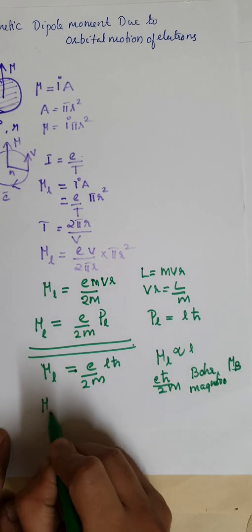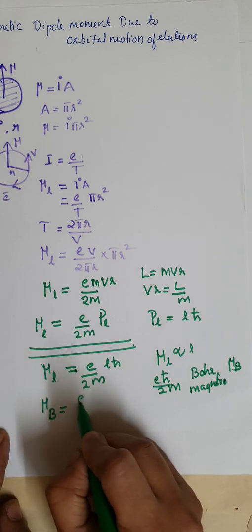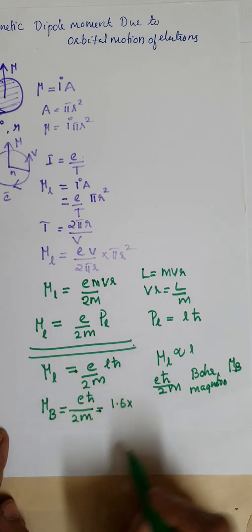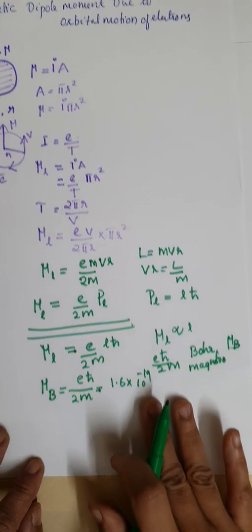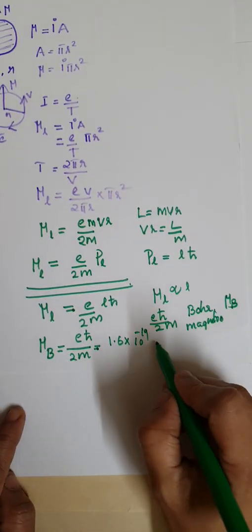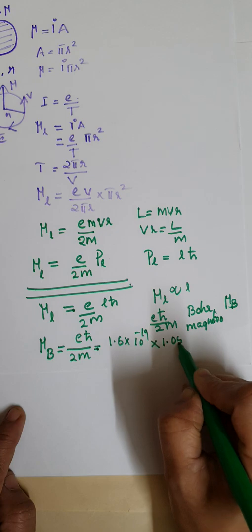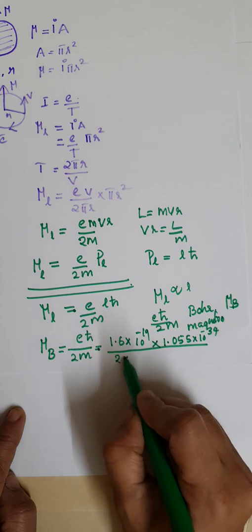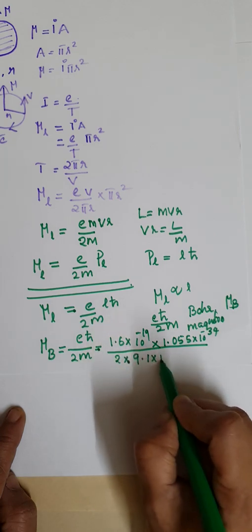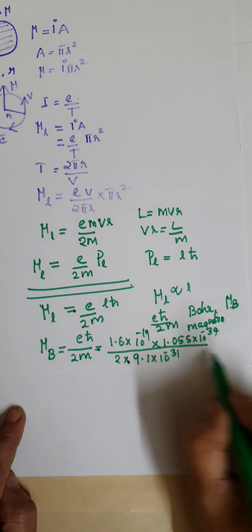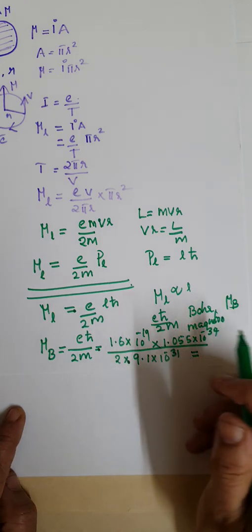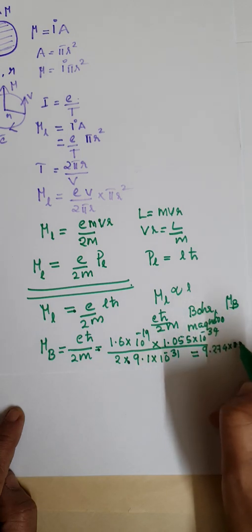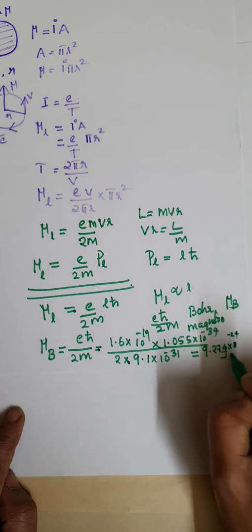We can find the value of the Bohr magneton: mu B equals E h-bar divided by 2M. E is 1.6 times 10 to the minus 19, h-bar is 1.055 times 10 to the minus 34, divided by 2 into the mass of the electron 9.1 times 10 to the minus 31, giving us 9.274 times 10 to the minus 24 joules per Tesla.